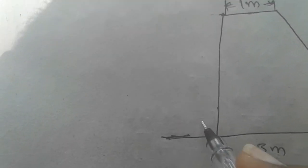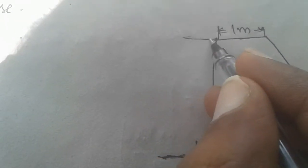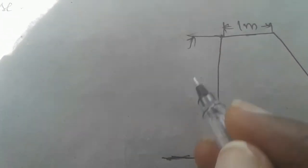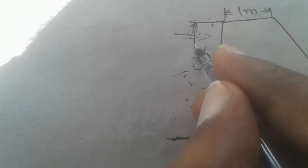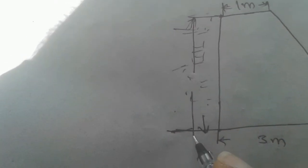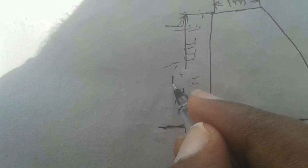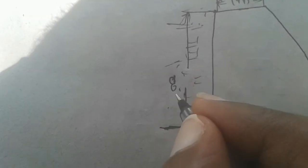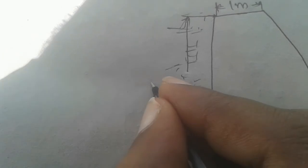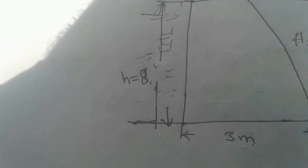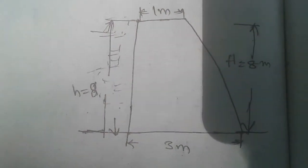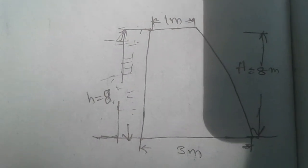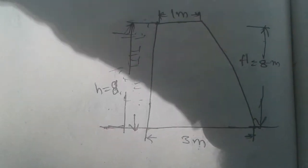From here to here is the water level, so small h is also 8 meters. Now we have all values here, so now follow the step-by-step formulas.